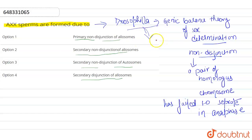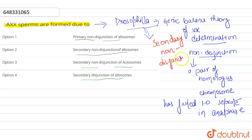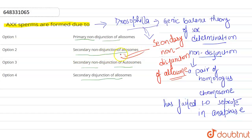So in Drosophila, AXX sperms are formed due to secondary non-disjunction of allosome. So option number two is our correct answer: secondary non-disjunction of allosome.